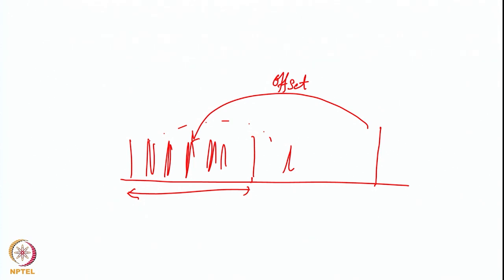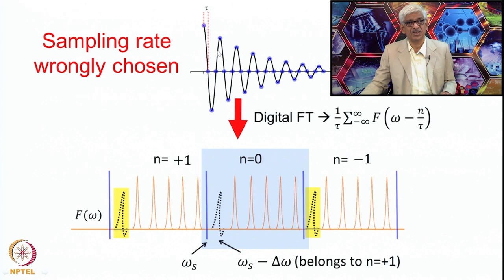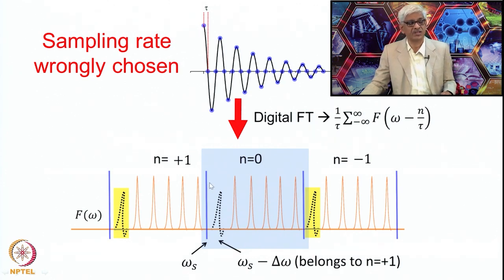How does that happen? This happens as a consequence of the digitization theorem. The noise will also fold, which has another consequence we will discuss shortly. If the sampling rate is wrongly chosen — you place the offset somewhere, choose your spectral width wrongly, collect the digitized data, and do a digital Fourier transformation — then it is a consequence of that digital Fourier transformation that you get lines to fold.